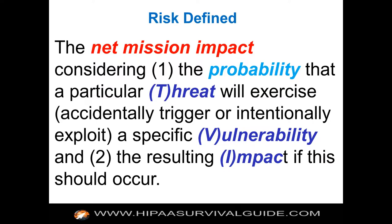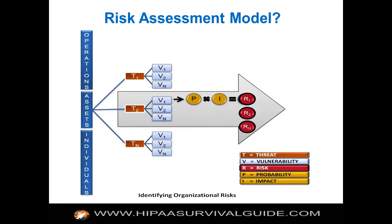So, what's a risk? We're going to use the definition that NIST uses. That's the gold standard. Their definition: the net adverse mission impact considering the probability that a particular threat — say, fire — will exercise, or accidentally trigger, or intentionally exploit a specific vulnerability — say, you don't have your servers in a fireproof room. And the resulting impact if this should occur, meaning the threat actually exploiting the vulnerability.